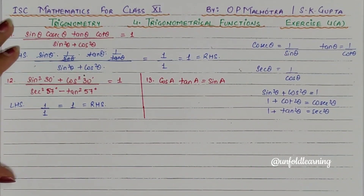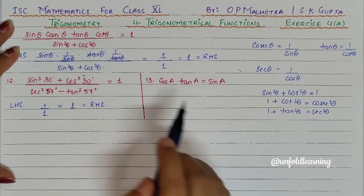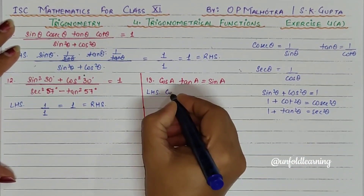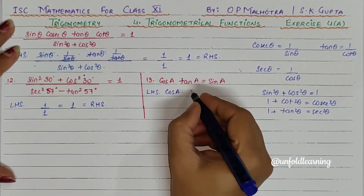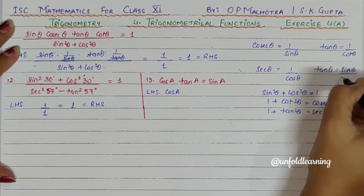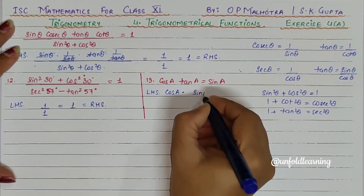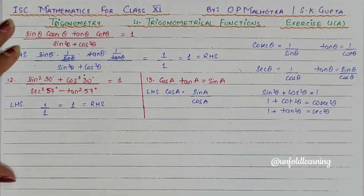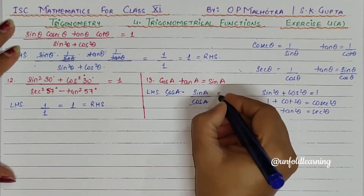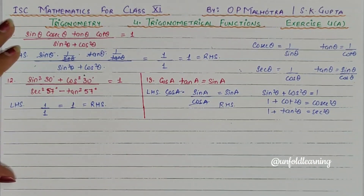Next is question number 13: cos A · tan A is equal to sin A. Taking LHS, we have cos A · tan A. We can write tan A as sin A upon cos A. So we have cos A multiplied by sin A upon cos A. The cos A cancels, and we will get sin A, which is our RHS. Hence, this is the solution.